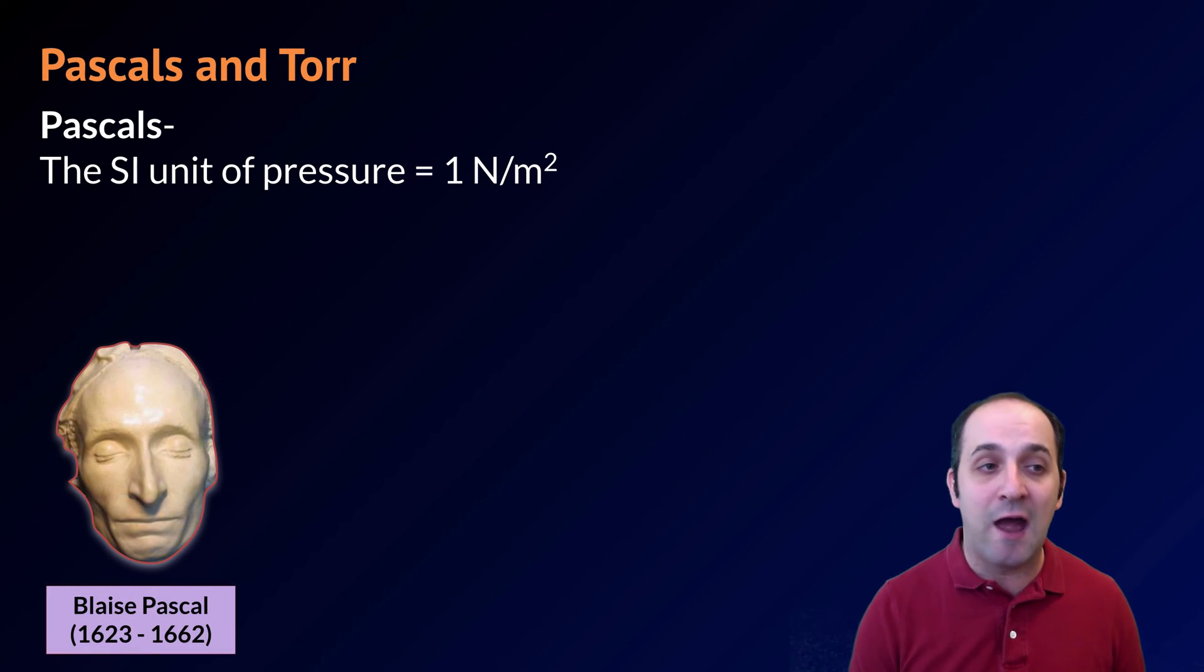There are a couple different versions of pressure that we should be familiar with. The standard unit for pressure is called the Pascal, named after Blaise Pascal, who you see here in repose. It's defined as one newton per meter squared, which is roughly the amount of pressure you would feel if you took an apple, held it three feet above your hand, and let it drop into your hand. That force that you would feel is approximately one newton.